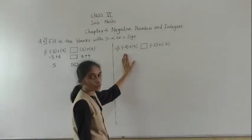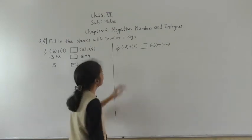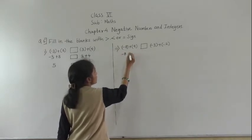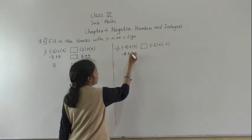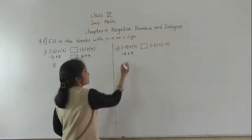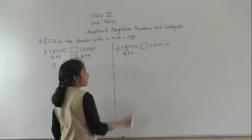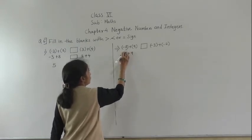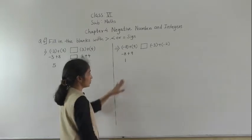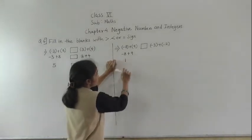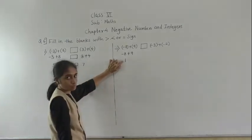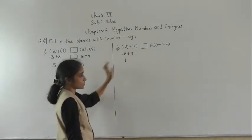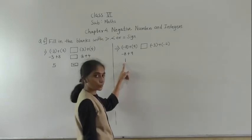Let's solve one more example. First, we open the bracket. There is no sign here, which means plus, then plus minus gives minus. Plus plus gives plus 9. Now minus plus gives minus, so we subtract from 9 and get 1. We keep the sign of the greater number: 9 has a positive sign, so the answer is plus 1. We can write just 1 also.